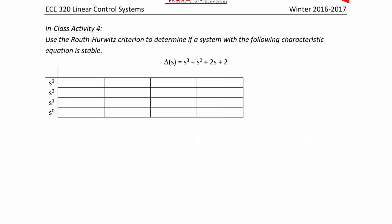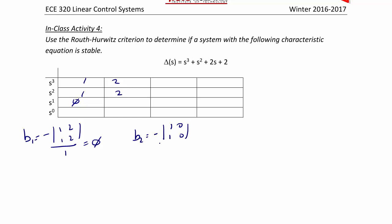Let's try another example. What if delta of s is s cubed plus s squared plus 2s plus 2? We're going to have in the first row 1, 2, and in the second row 1, 2. B1 is equal to negative 1 times 2 minus 1 times 2, divided by 1, which equals 0. And B2 is equal to negative 1 times 0 minus 1 times 0, divided by 1, which equals 0. This is one of our special cases — we have a row of zeros.